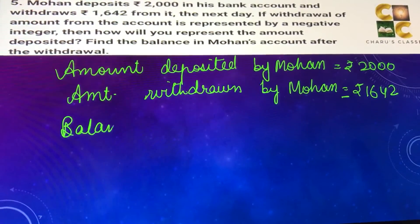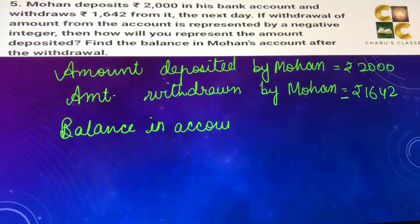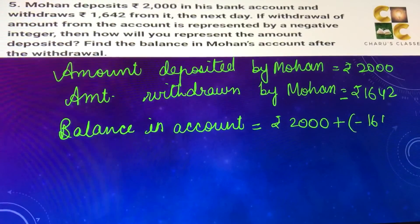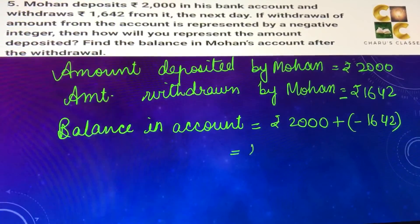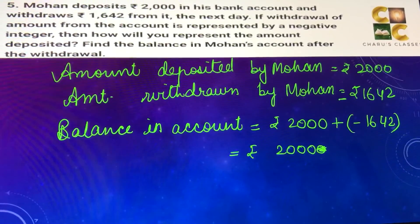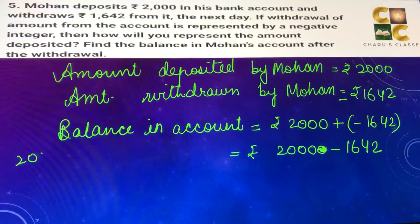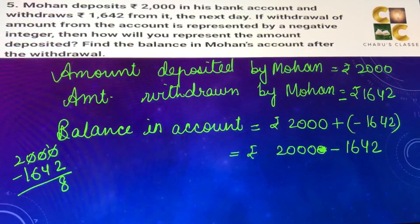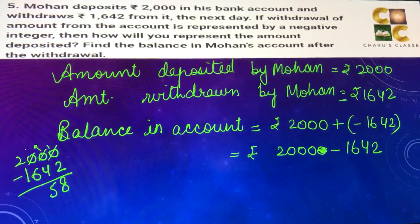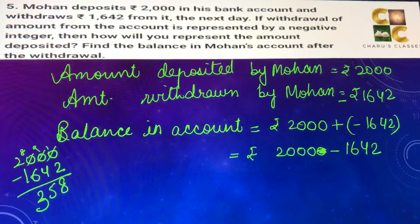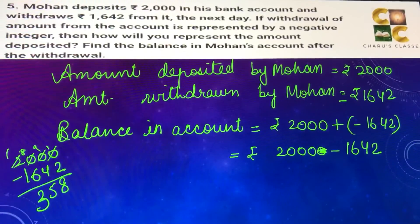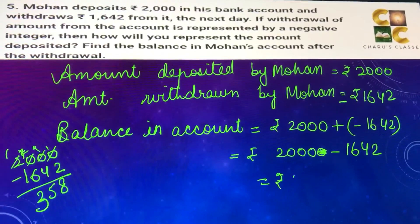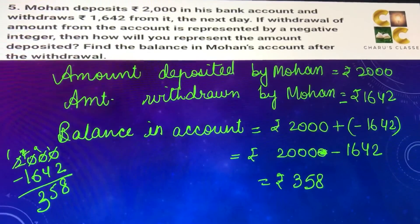The balance in the account will be equal to rupees 2000 plus minus 1642, which equals 2000 minus 1642. Subtracting gives rupees 358. So rupees 358 is the balance in Mohan's account.